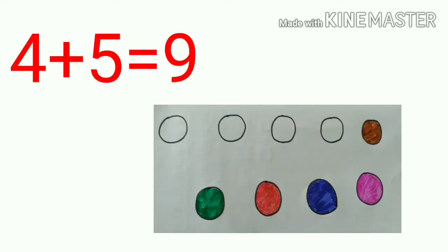Here, out of 9 circles, 5 circles are shaded and 4 circles are unshaded. So we can add 4 plus 5 — what is the answer? Yes, if we add 4 plus 5, we will get 9.